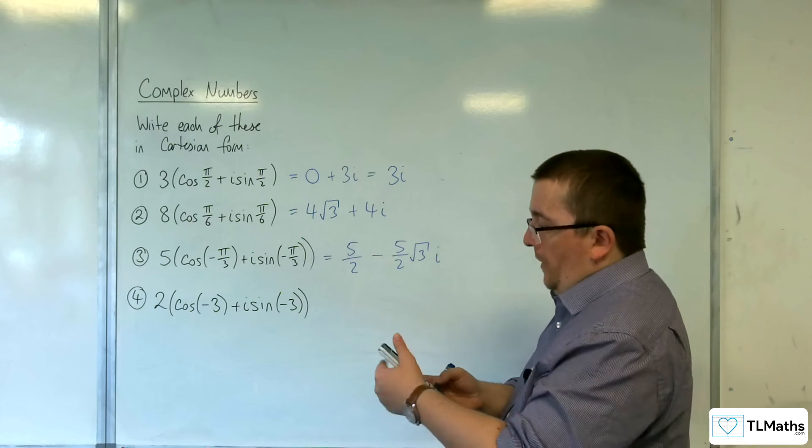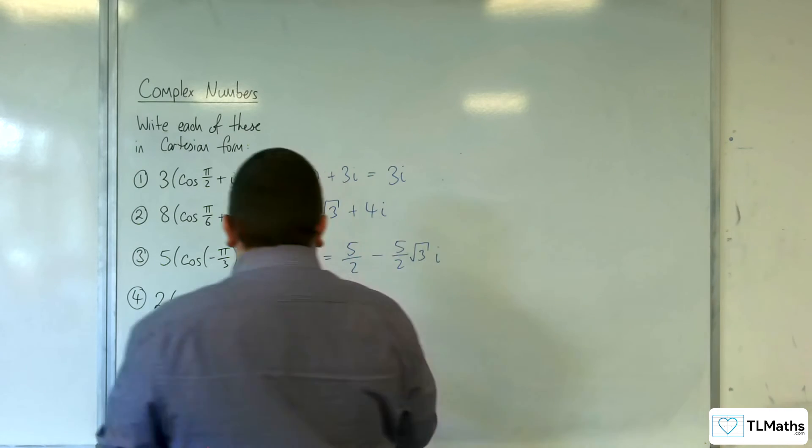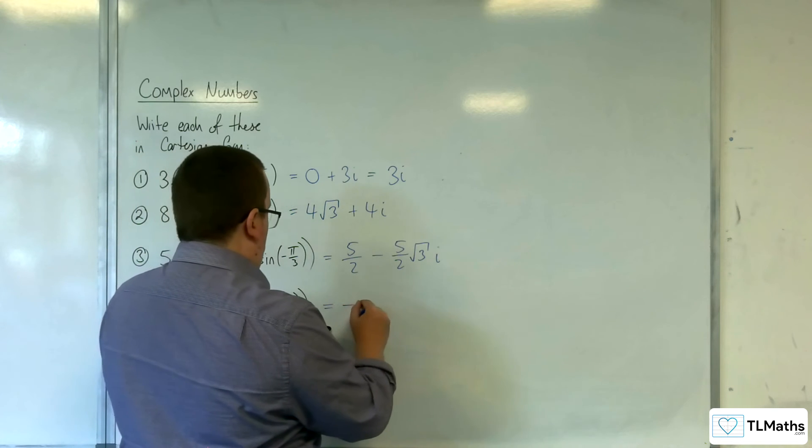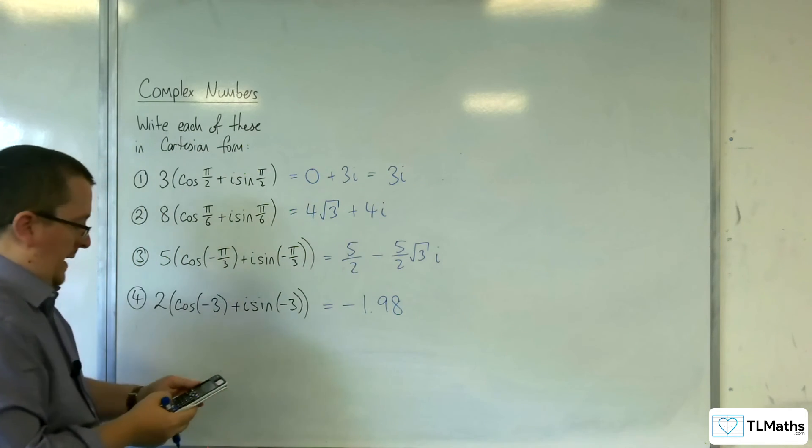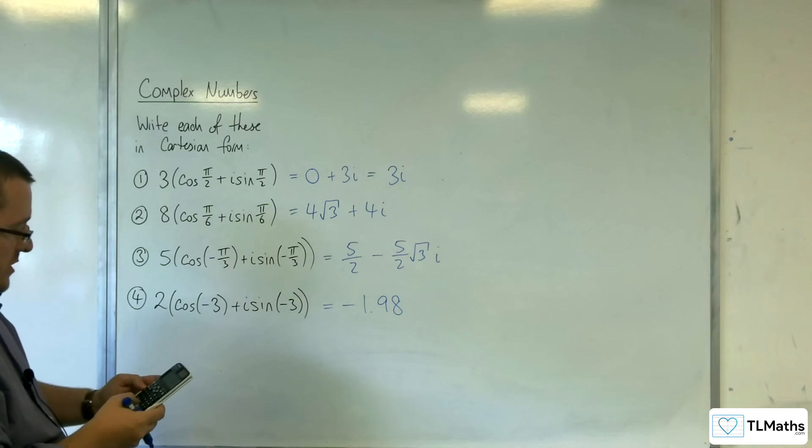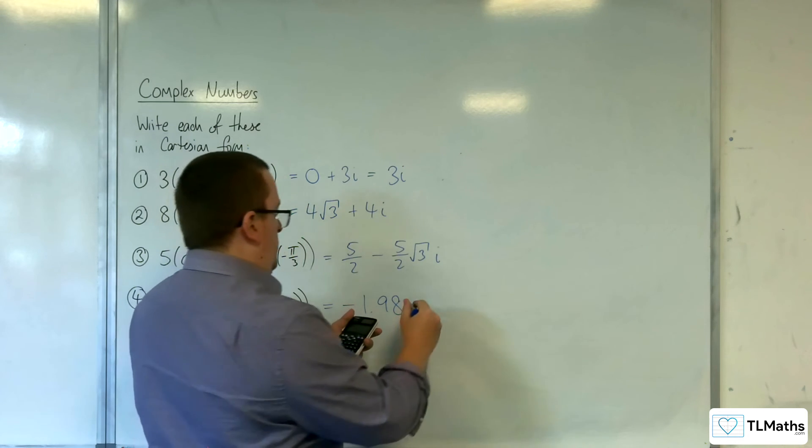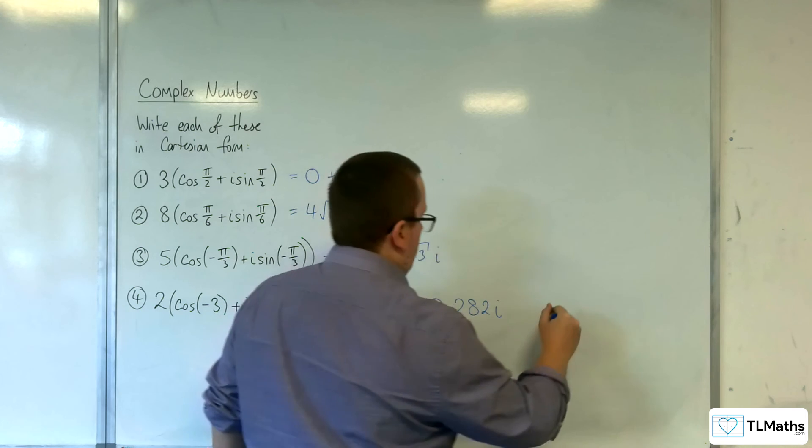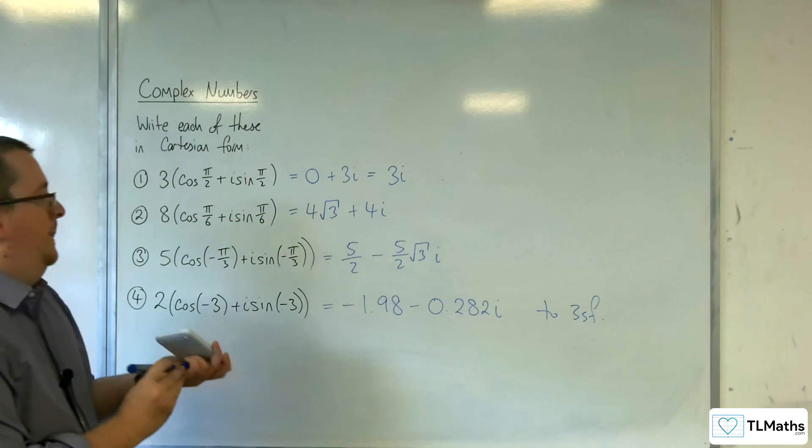And then finally, 2 times cosine of minus 3. So I'm going to write these to 3 sig fig. So minus 1.98. And then 2 times sine of minus 3 is minus 0.282. So take away 0.282i to the 3 sig fig.